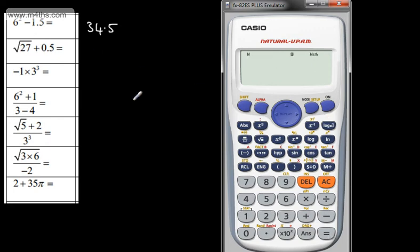Okay let's look at this one. We need the root of 27 plus 0.5. Now we press the root button and then we type in 27. We then need to come out of the root and we simply press the button and we move across. We add to that 0.5 and we're going to have our answer.